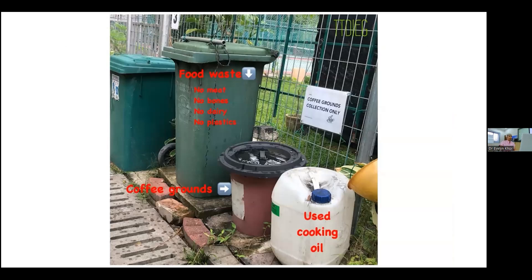We had a bin for food waste, but we didn't want meat, bones, dairy products, or plastics. We also collected coffee grounds because they are very valuable for composting, and we have many cafes including Starbucks that didn't know what to do with them — bags of coffee grounds came in. The key message is: if you ask people to do something, you also need to be the drivers for change and provide a facility for them to discard food waste or used cooking oil.